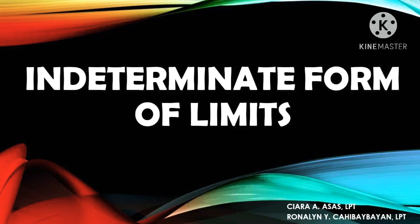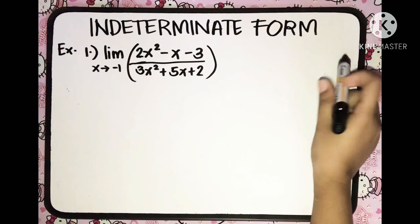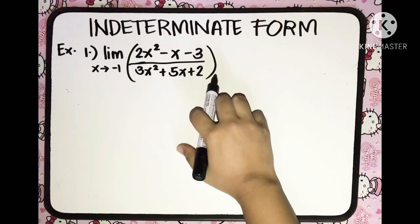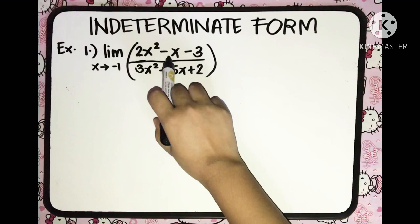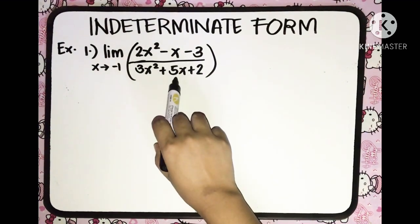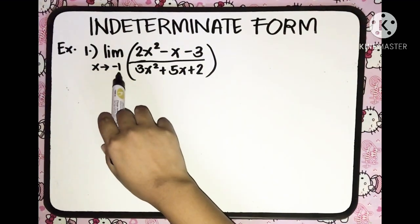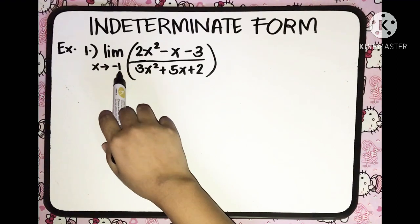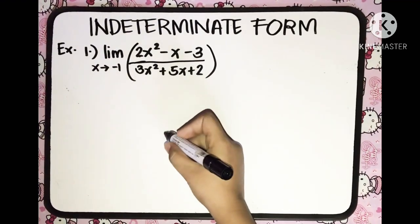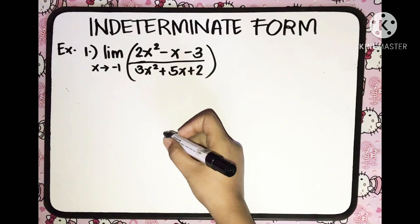Hi everyone! Our lesson for today is about the indeterminate form of limits and we'll discuss it using this given example. We have the limit of 2x squared minus x minus 3 over 3x squared plus 5x plus 2 as x approaches negative 1.